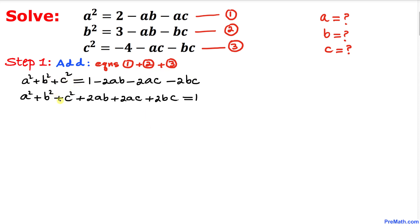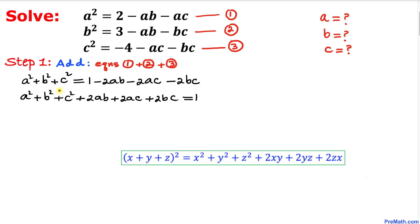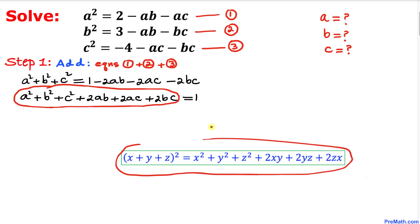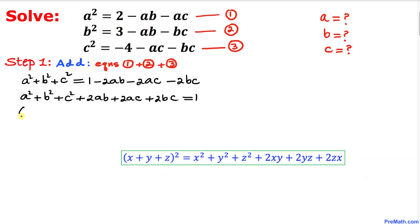So all our terms end up on the left hand side and we have just 1 on the right hand side. We can see that the left hand side represents the expansion of (a + b + c)² according to the perfect square formula.